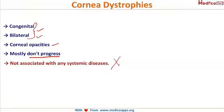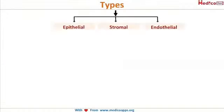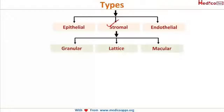Definitely they are not associated with any systemic disease. None of these are associated with any systemic disease. There are three main types: epithelial, stromal, and endothelial, depending on the location. However, for your exam purpose we will learn only about the stromal corneal dystrophies.